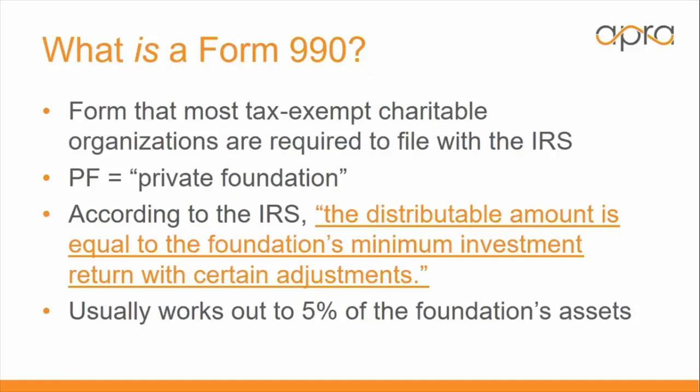Now you might be wondering: what exactly is a Form 990? It is a form that most tax-exempt charitable organizations are required to file with the IRS every year, much in the same way that we as individuals have to file tax returns. Sometimes in the header of a Form 990 you'll see a capital PF, which stands for private foundation. Foundations are required to give away roughly five percent of their assets each year.